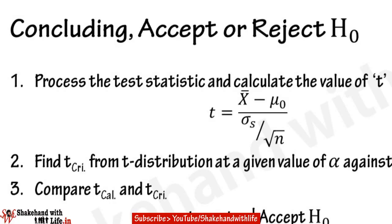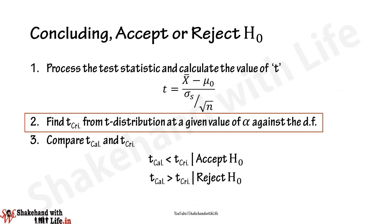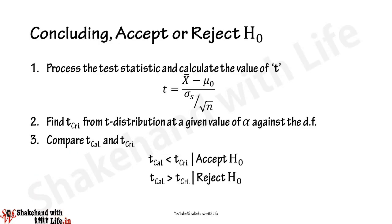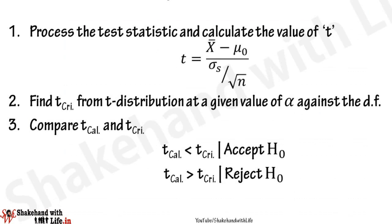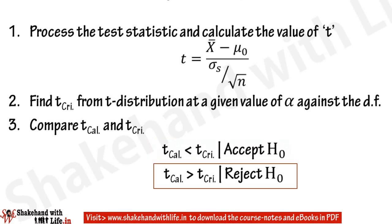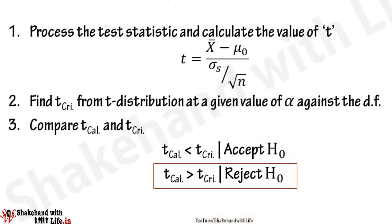To conclude whether the null hypothesis should be accepted or rejected, process the test statistic by replacing the given parameters in the equation and find the t value. Then find the critical value for the given significance level — most of the time it is 5% — against the degrees of freedom from the t-distribution table. If the calculated t is less than the critical t, accept the null hypothesis; if greater, reject it.